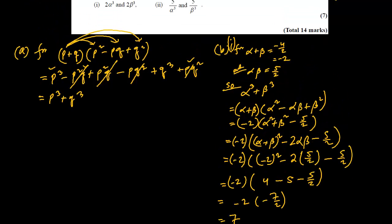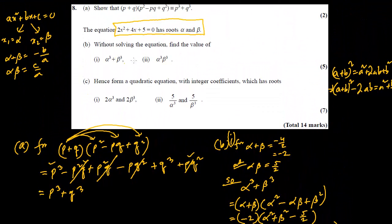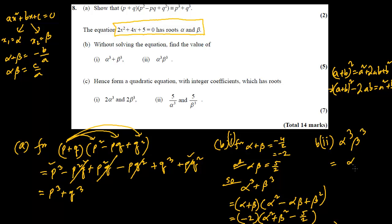For part b2, α³ × β³ can be written as (αβ)³ by index laws. Since αβ = 5/2, this is (5/2)³ = 125/8.